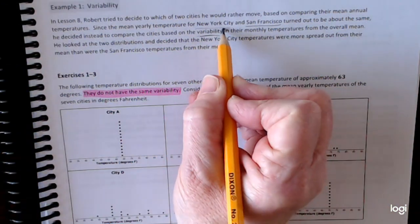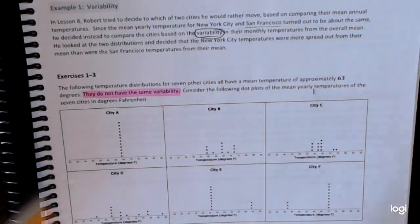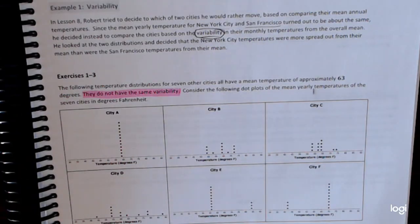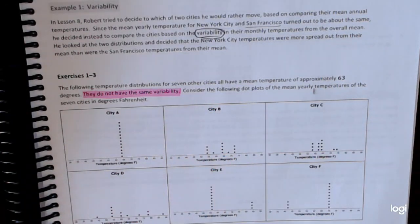Remember, variability, go ahead and circle the word if you have your book in front of you. Variability, remember, is kind of this spread of data in a distribution from some focal point. And we use that focal point, that triangle we drew on here, which was the mean.